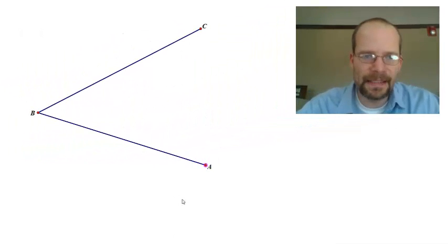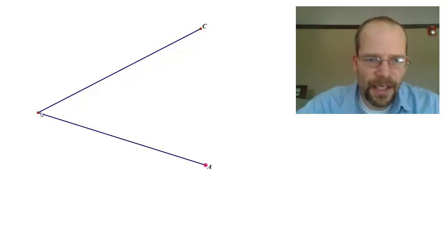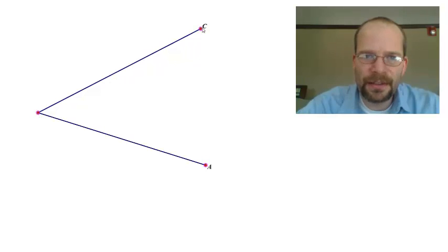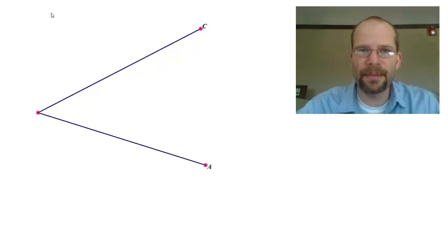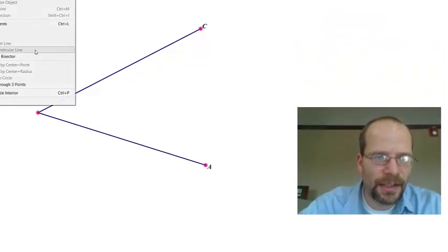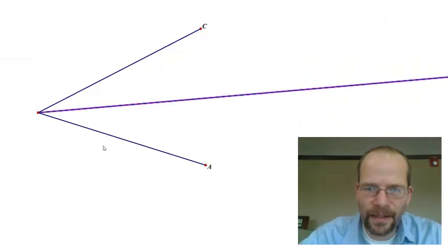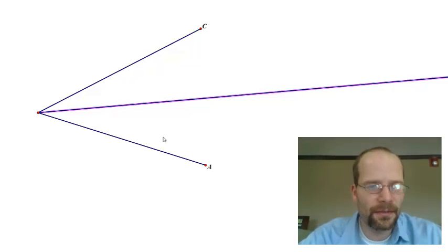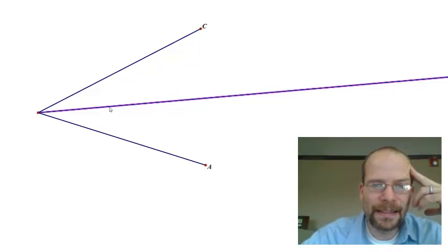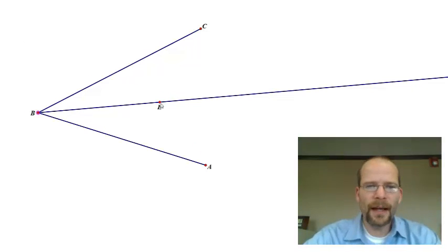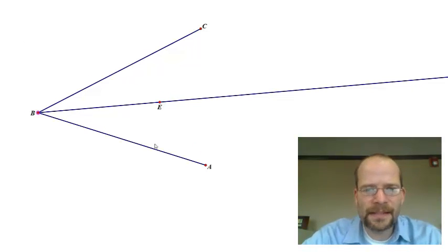I have here angle ABC, and I'm going to go ahead and create the angle bisector — the software will do that for us, although we will ultimately learn how to do that with a compass and a pencil and paper. There it is. Notice it's a ray — it goes off to infinity to the right. The question is: how far is point E from line AB, and how far is E from BC?